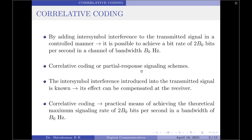The design of these schemes is based on the idea that since the intersymbol interference introduced into the transmitted signal is already known, its effect can be compensated at the receiver. Therefore, the correlative coding may be regarded as a practical means of achieving the theoretical maximum signaling rate of 2V₀ bits per second in a channel of bandwidth V₀ hertz.